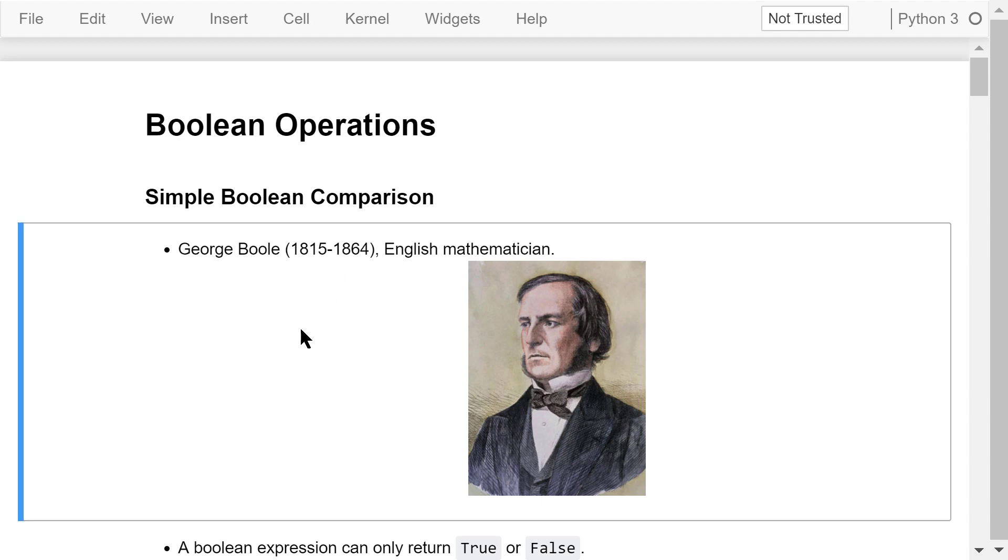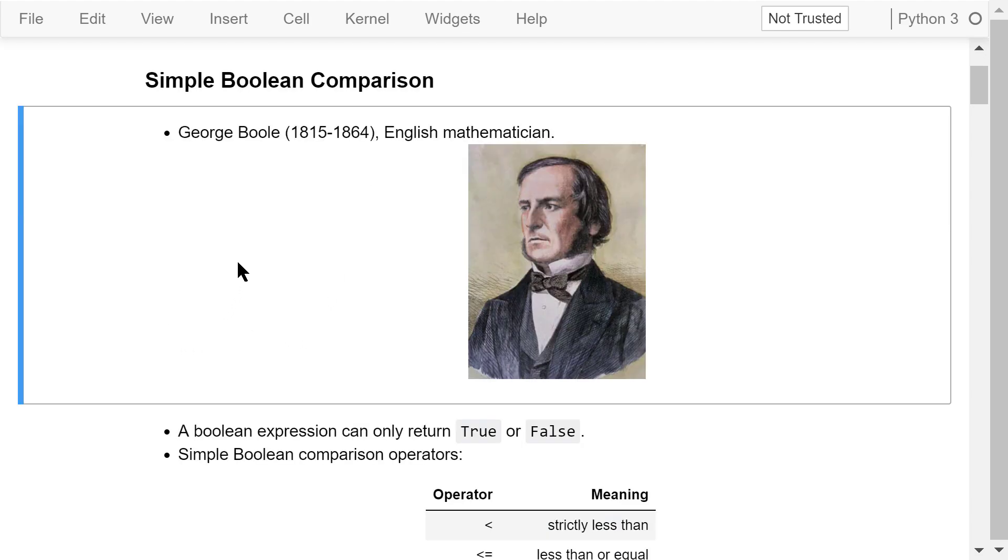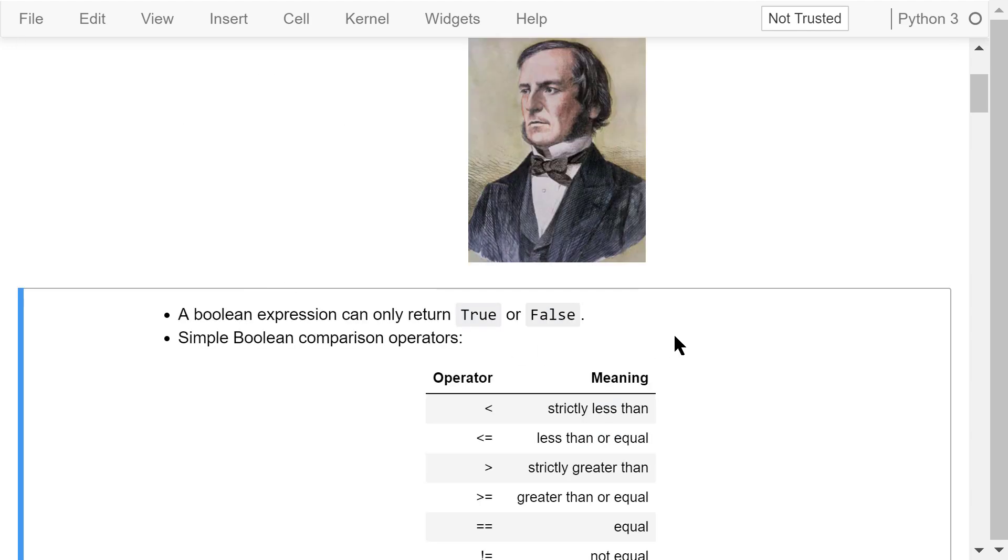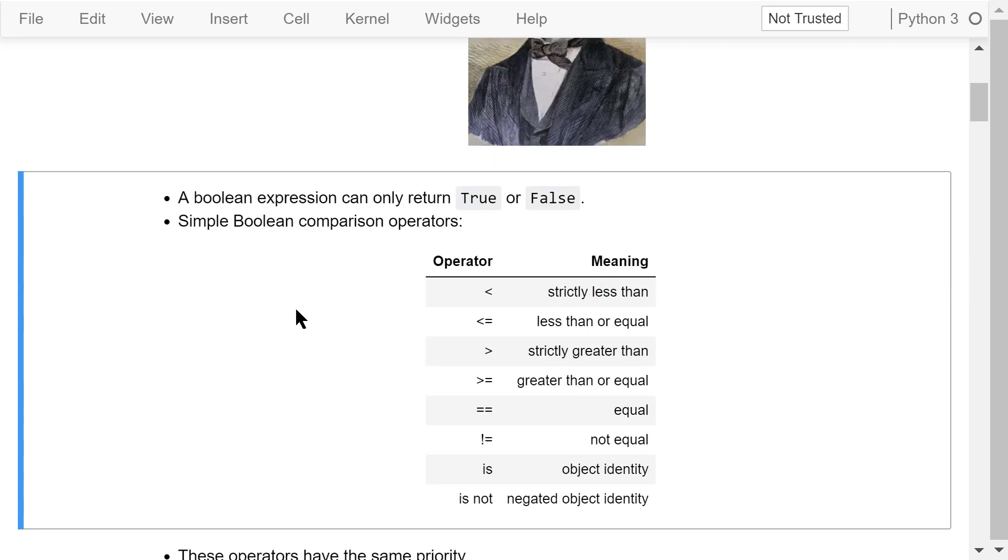The Boolean data type is named after George Boole, an English mathematician. Python Boolean expressions are commonly used as conditions in if and while statements. A Boolean expression can only return one of two values: true or false.